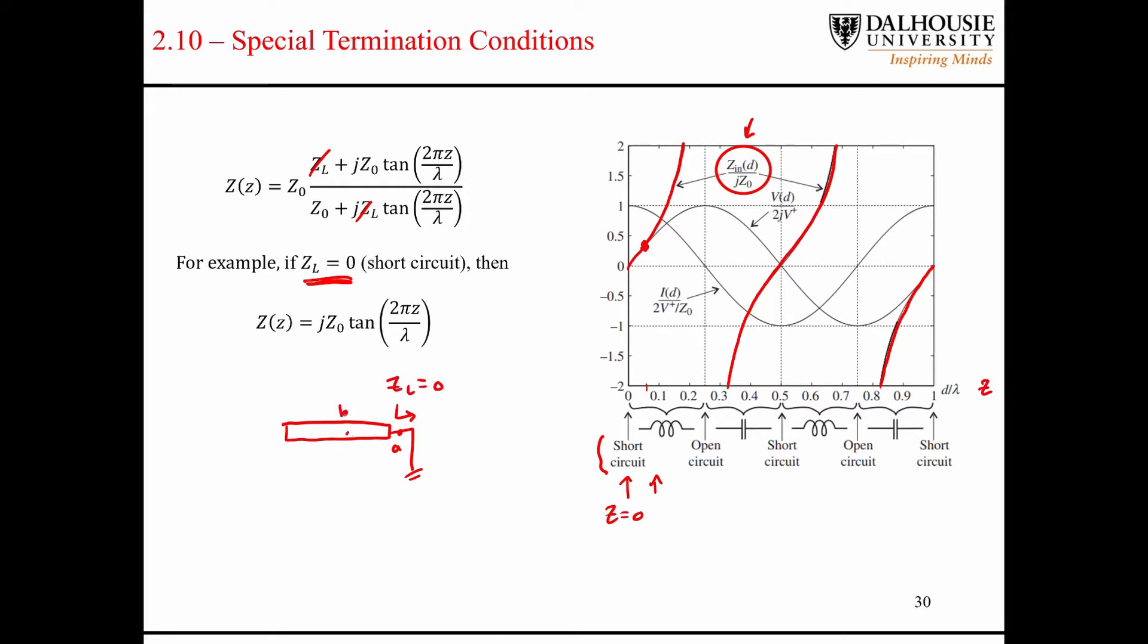But if we take our measurement at, say, point B, and we look in here, it's not necessarily going to be equal to zero. It's pretty incredible. And actually, when we go to a quarter of a wavelength, we end up sort of in a situation where we don't look anything like a short circuit. It now looks like an open circuit.